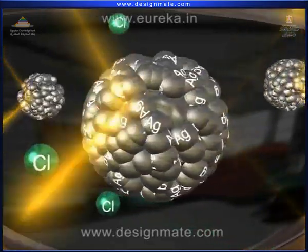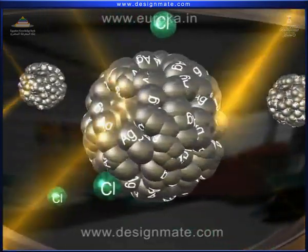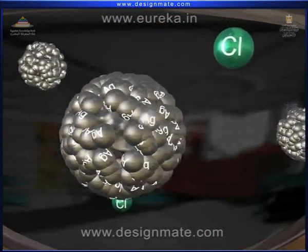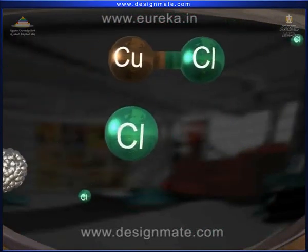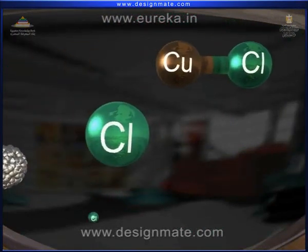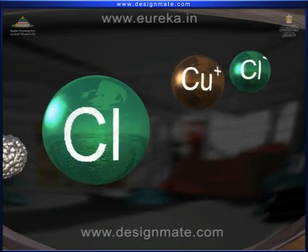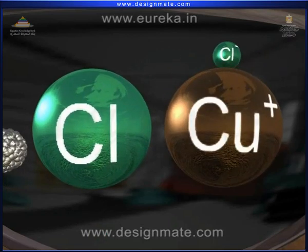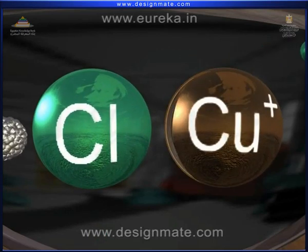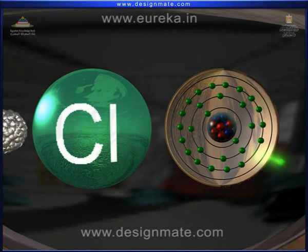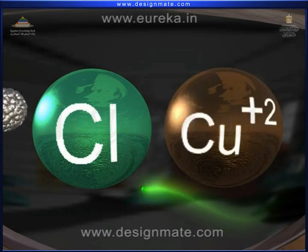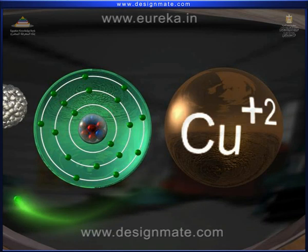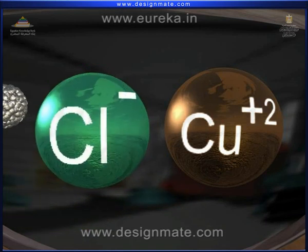When the photochromic glass is removed from the sunlight, these chlorine atoms react with Cu+ ions from copper monochloride molecules. Here, Cu+ ion loses an electron to become Cu+ ion, while an electron is accepted by a chlorine atom to form Cl- ion.